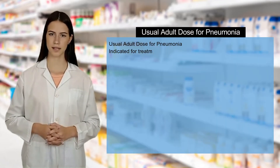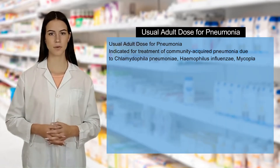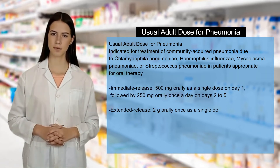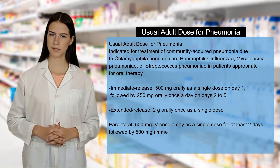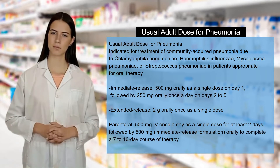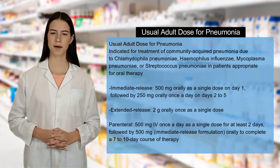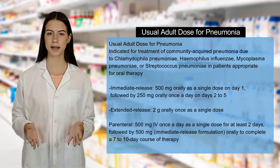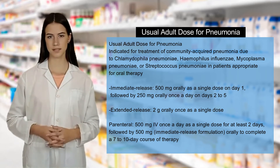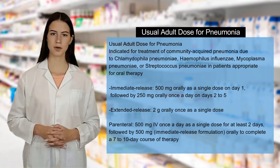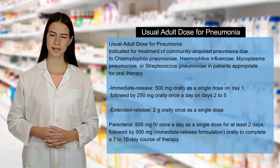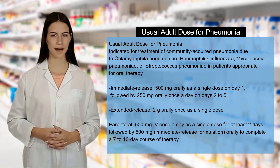Usual adult dose for pneumonia: Indicated for treatment of community-acquired pneumonia due to Chlamydophila pneumoniae, Haemophilus influenzae, Mycoplasma pneumoniae, or Streptococcus pneumoniae in patients appropriate for oral therapy. Immediate release: 500 mg orally as a single dose on day 1, followed by 250 mg orally once a day on days 2 to 5. Extended release: 2g orally once as a single dose. Parenteral: 500 mg IV once a day as a single dose for at least 2 days, followed by 500 mg.